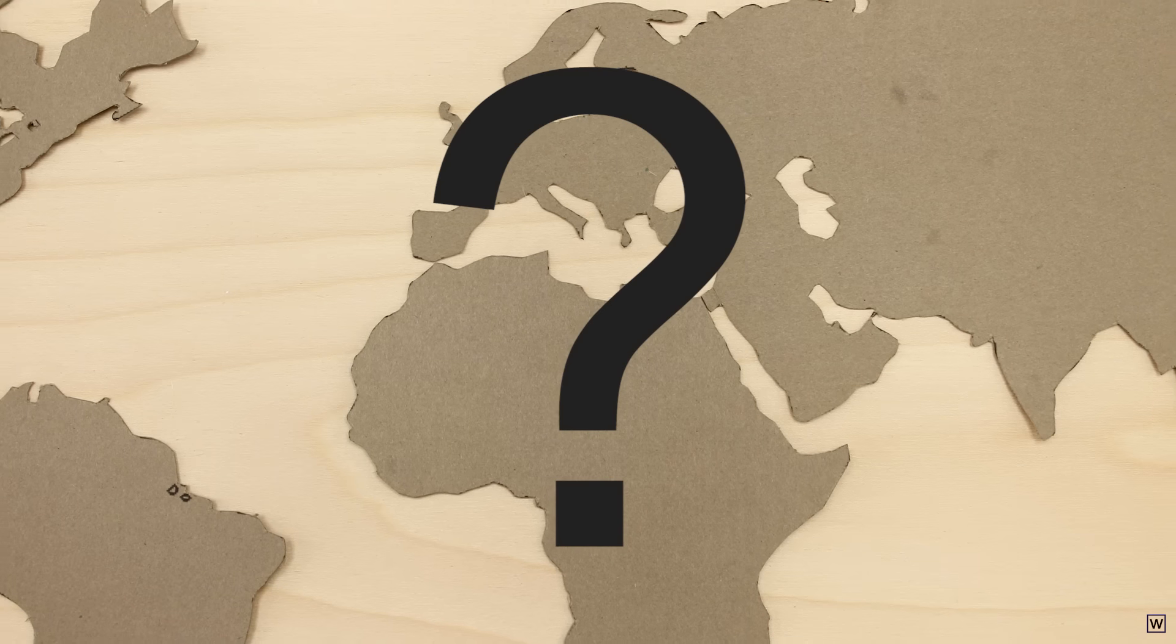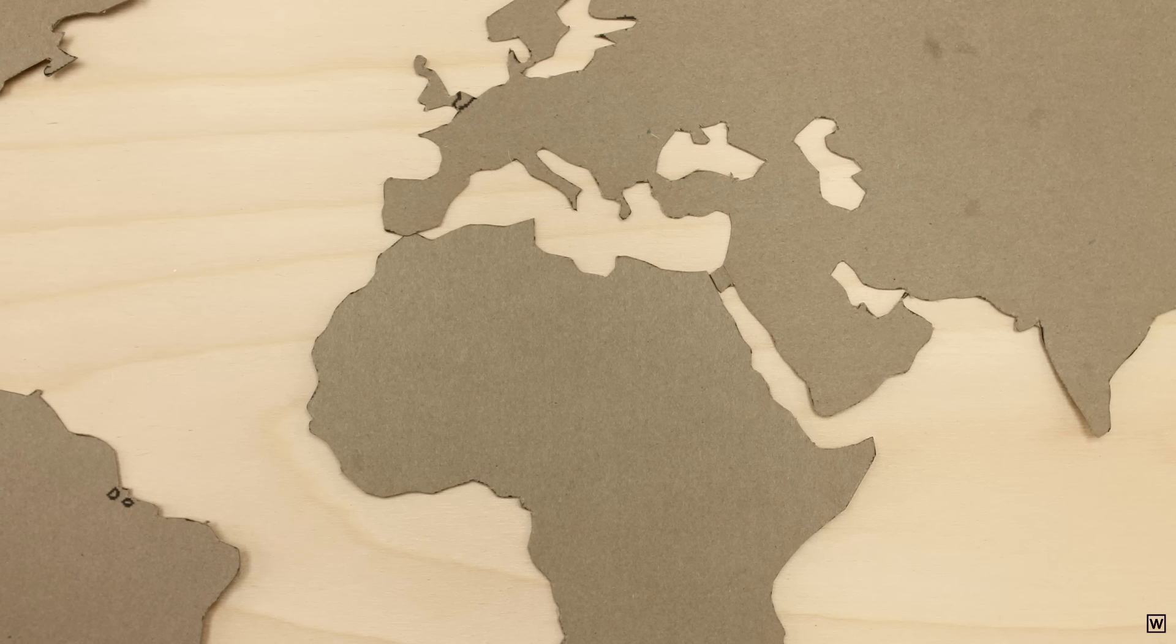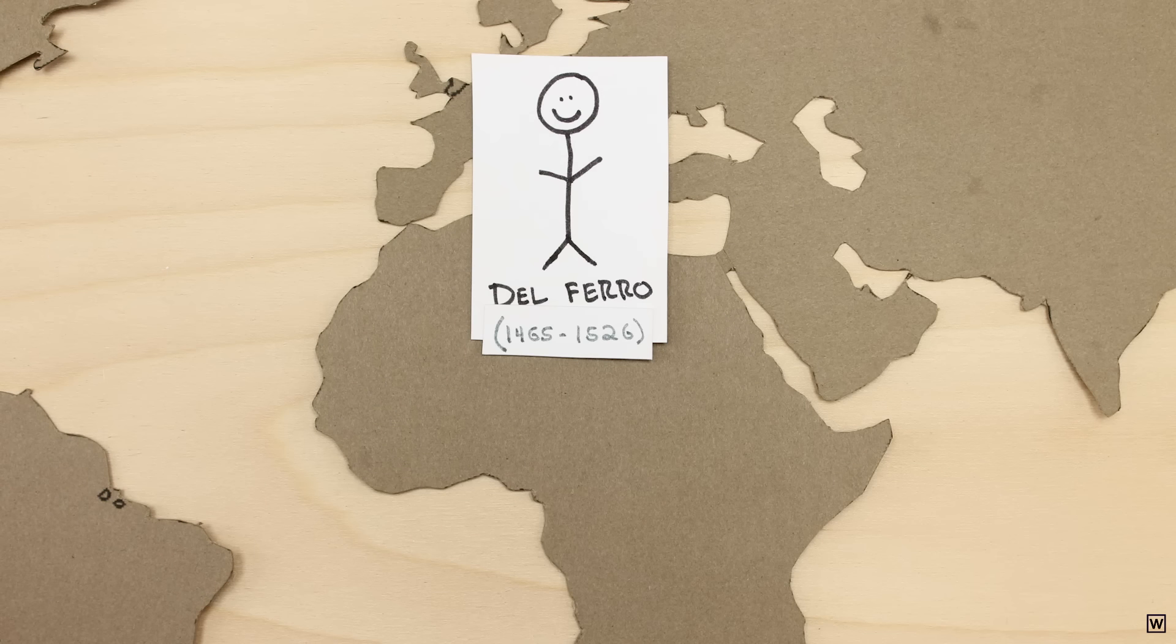But something happened in Europe around five centuries ago that would no longer allow mathematicians to ignore these numbers. An Italian mathematician, Scipione del Ferro, was trying to solve a problem not that different than ours.